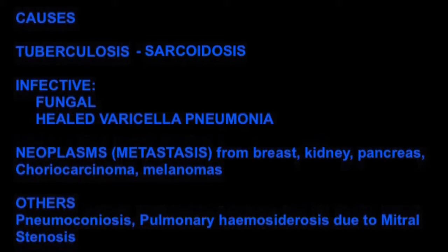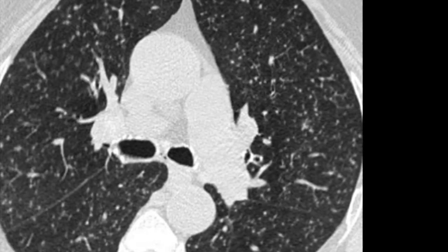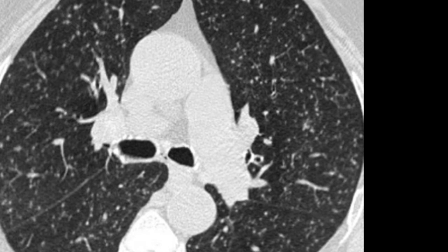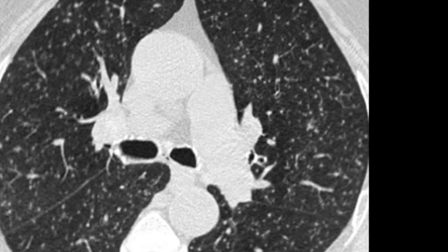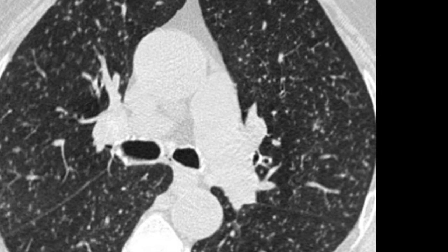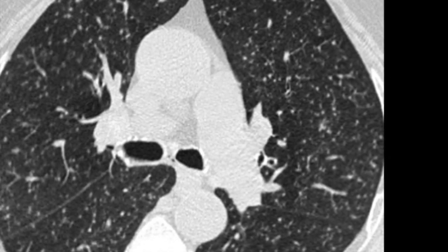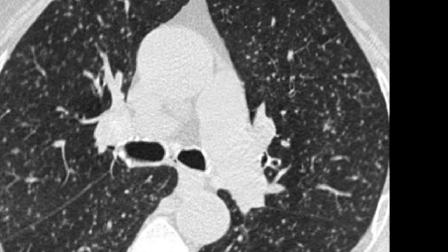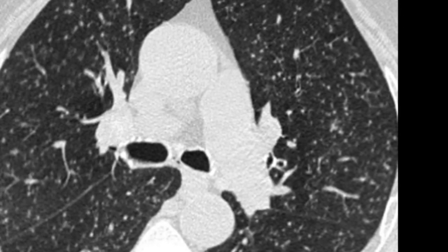The next step is usually to do a CT scan, where you see these small miliary nodules scattered on both sides of the lungs. You might also end up seeing other signs of tuberculosis like hilar or mediastinal lymphadenopathy with caseation necrosis. And sometimes you might find infiltrates as well, which may not be seen on the chest X-ray.